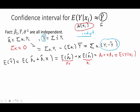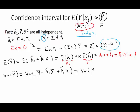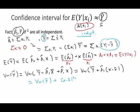Now let's find the variance of ŷ. Writing β̂₀ = ȳ − β̂₁·x̄, we get ŷ = ȳ + β̂₁·(x − x̄). Since β̂₁ and ȳ are independent, we can split this as Var(ȳ) + (x − x̄)²·Var(β̂₁). Var(ȳ) = σ²/n, and from the last video Var(β̂₁) = σ² / Σ(x_i − x̄)². Factoring out σ², we get a nice expression for the variance of ŷ.